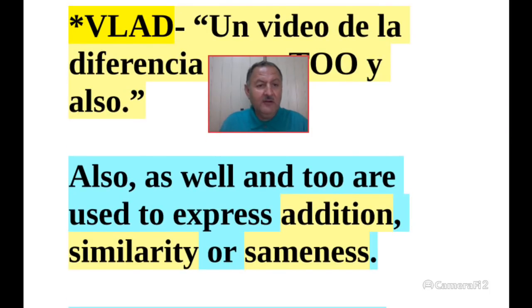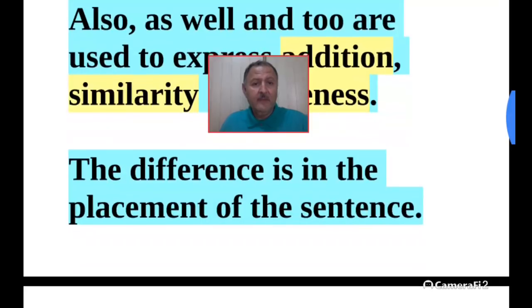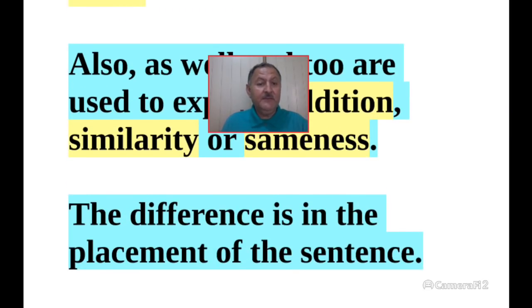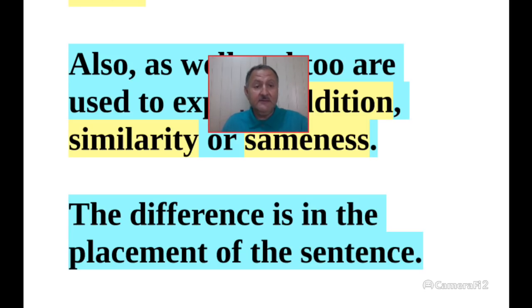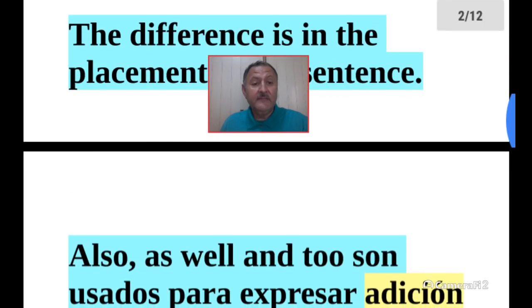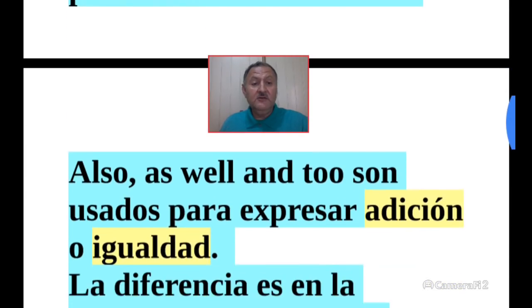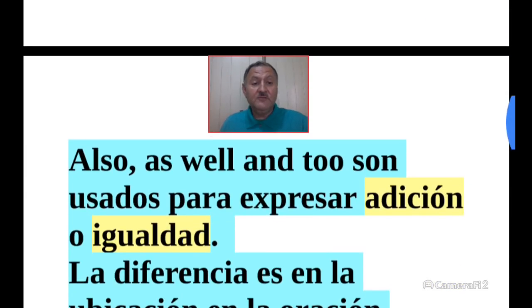Also, as well, and too are used to express addition, similarity, or sameness. The difference is in the placement within the sentence — where you put these words in a sentence. That's the difference.